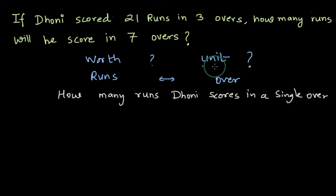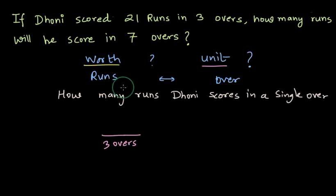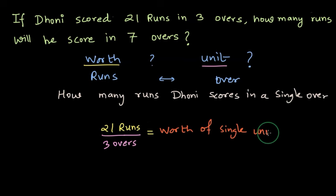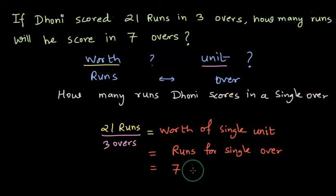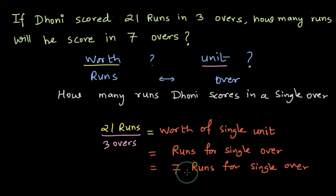We take the unit in the denominator, so the unit is the over — there are 3 overs. Then we put the worth for those many units, which is the runs, in the numerator. This gives us the worth of a single unit, basically the runs for a single over. Computing this, we find there are 7 runs per single over — Dhoni is scoring 7 runs per over.